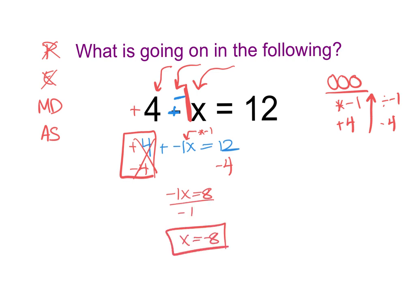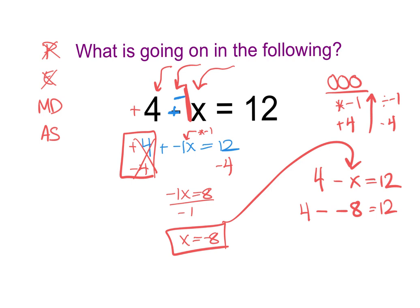If you're unsure whether the answer is right, you can plug it back in and check. Our original problem was 4 minus x equals 12. If we put negative 8 in place of x, it should make the equation true. So we check: 4 minus negative 8. Using keep-change-change, that becomes 4 plus 8, which is in fact 12. The answer checks out.